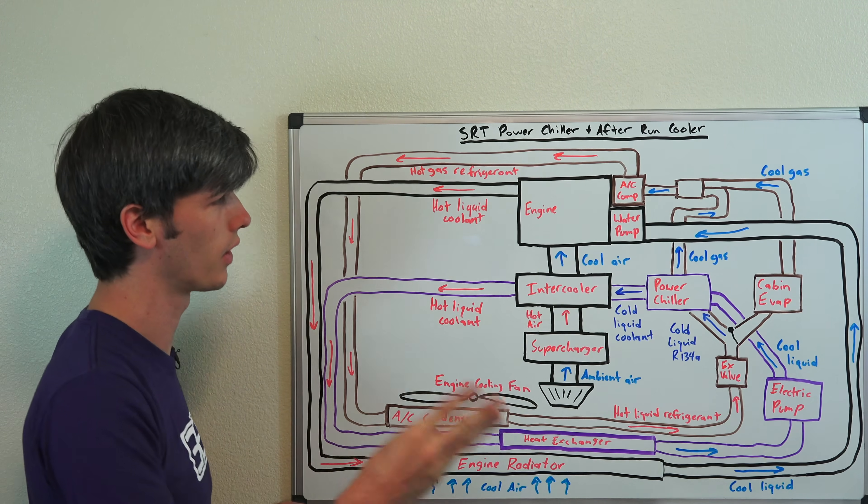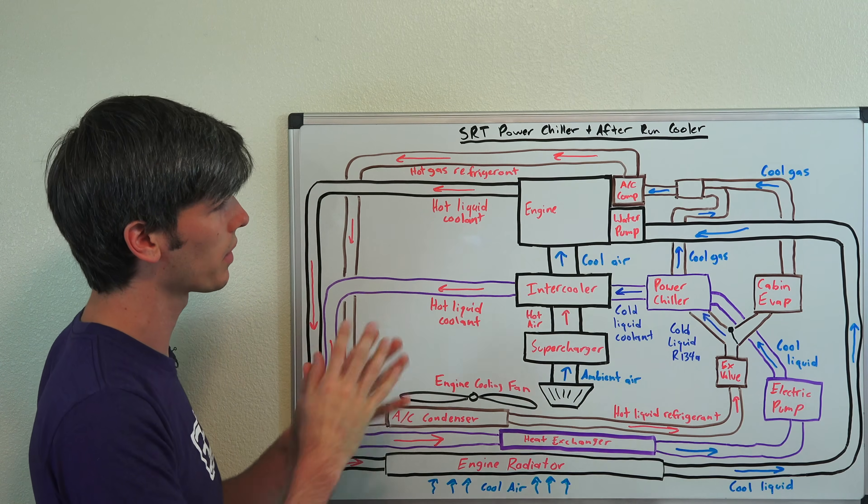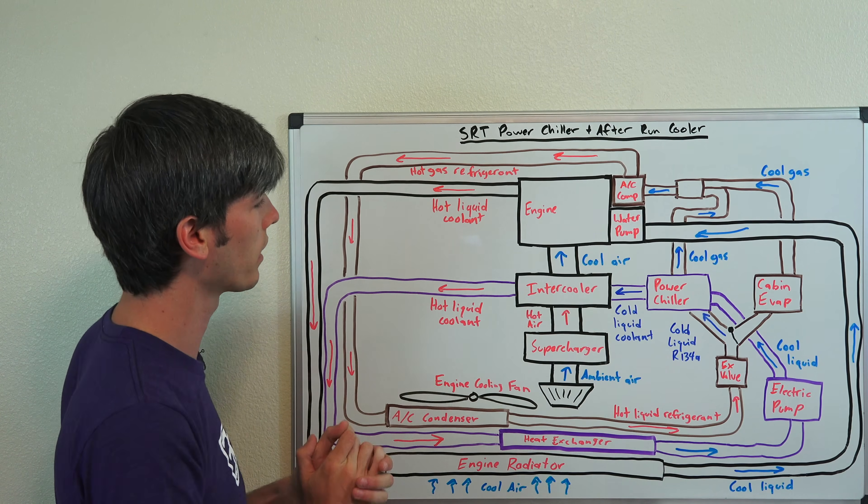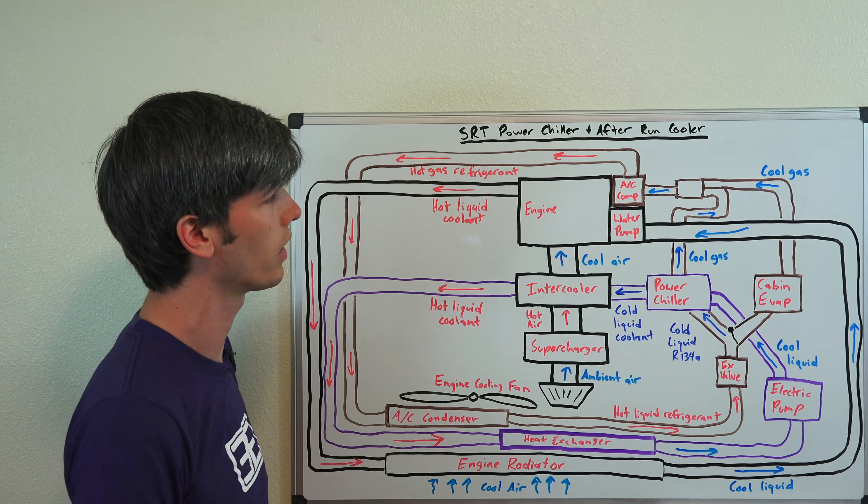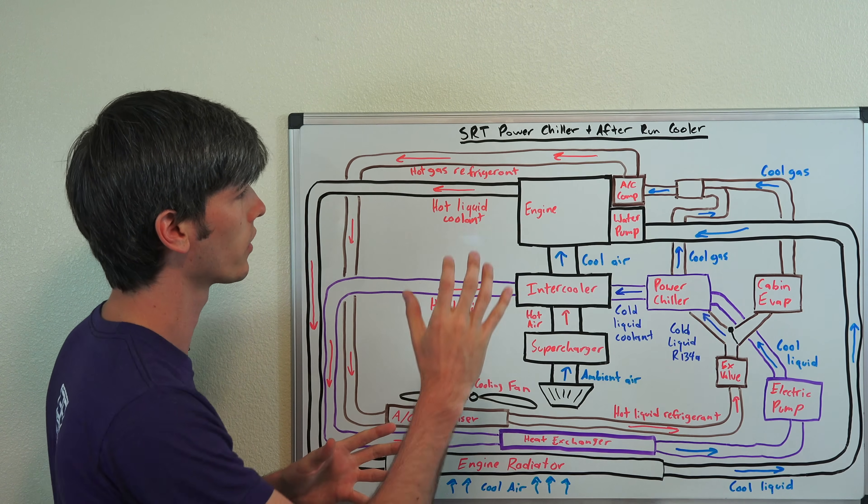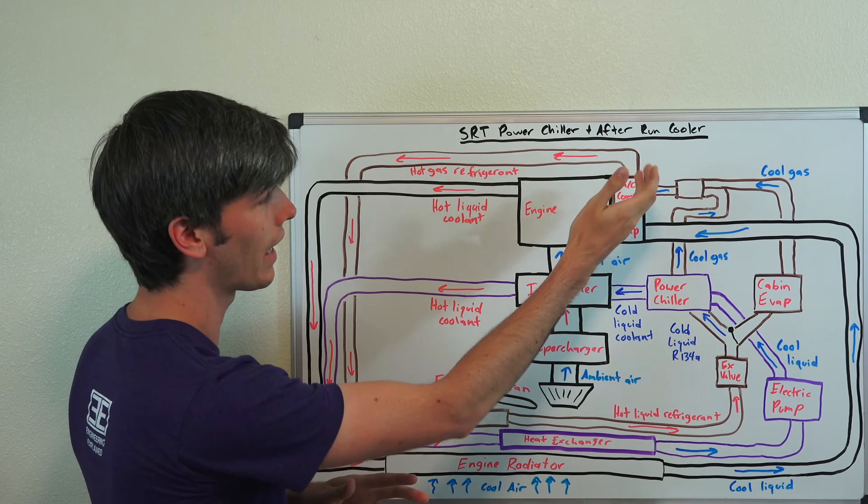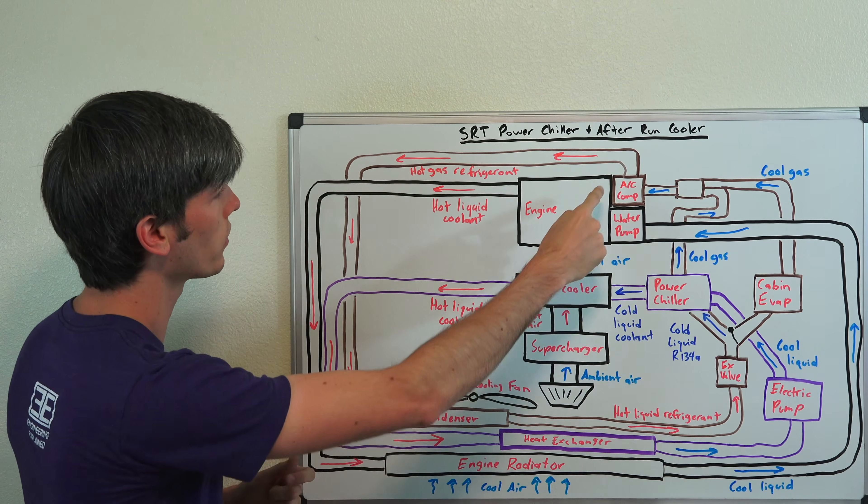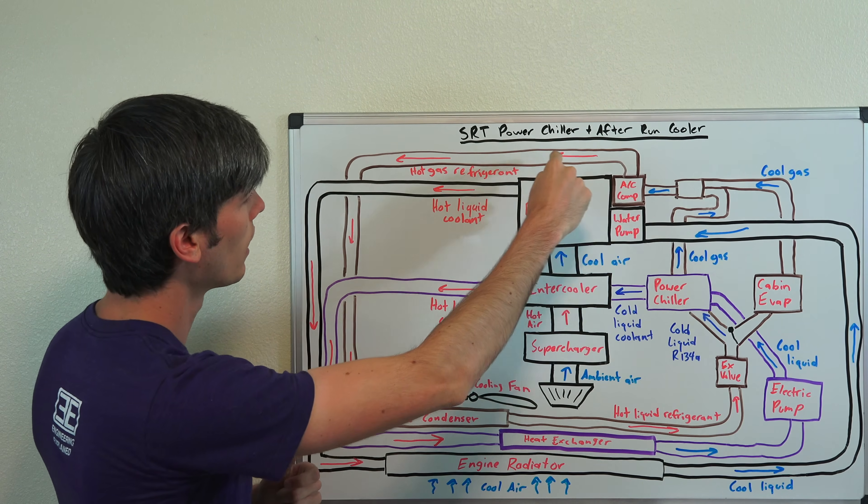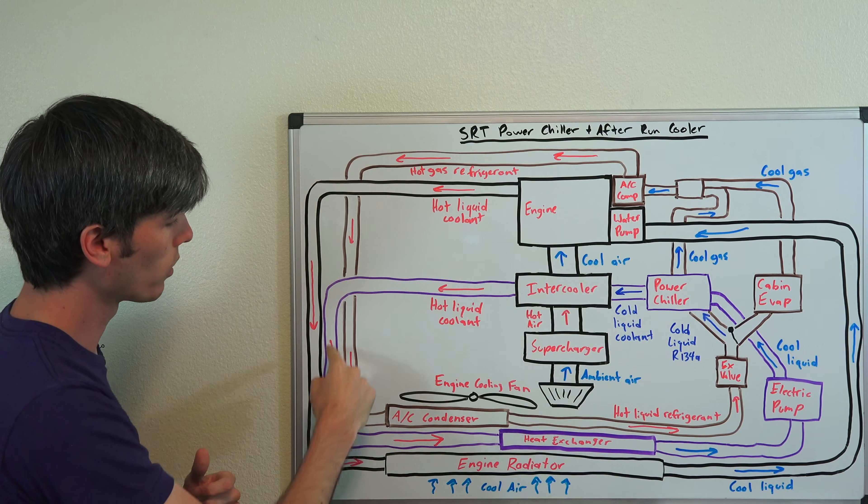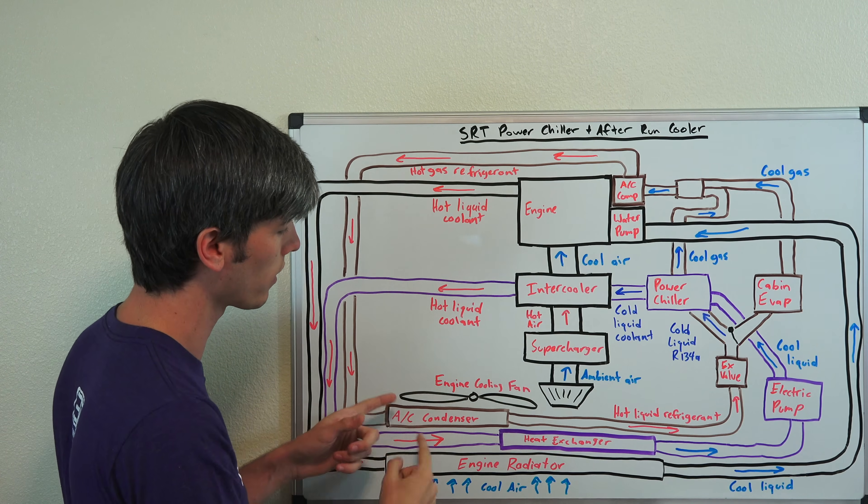And then your third system, your AC system. And some of the components are left out just to make it simpler to understand. I have a separate video explaining how air conditioning systems work. But essentially, you have an engine-driven AC compressor that's going to compress hot gas refrigerant, which will then travel through the AC condenser up front.